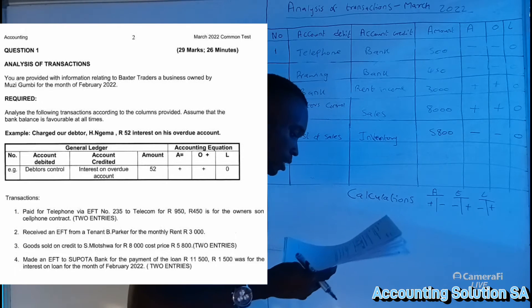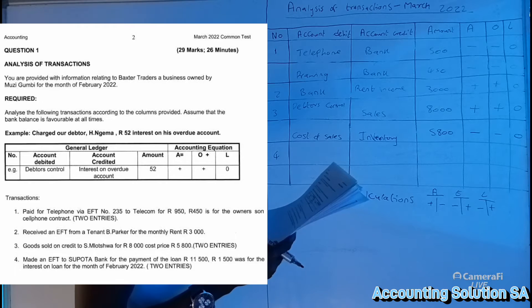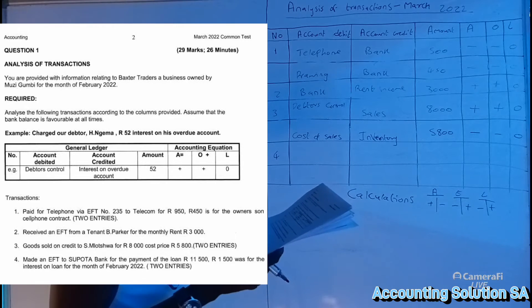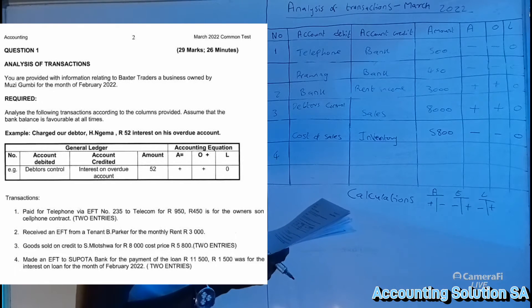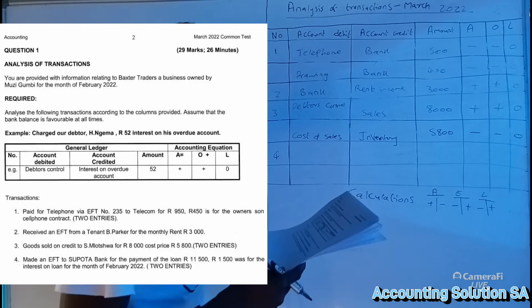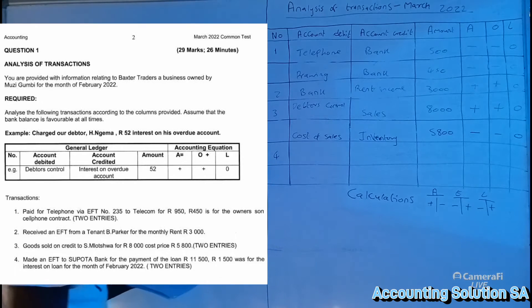Let's do the last one. They said made an EFT to Supporta Bank for the payment of the loan of 11,500, and 1,500 was for the interest on loan for the month of February 2022. Two entries.